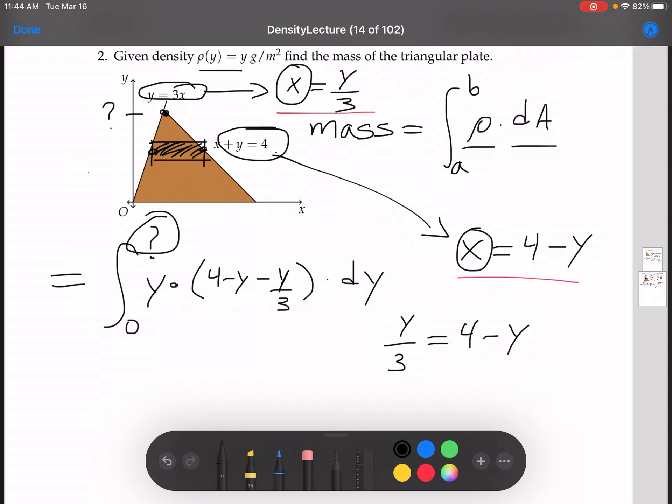Now solving for y. I'll multiply both sides by 3. That'll give me y equals 12 minus 3y. And then adding 3y to both sides, I'm going to get 4y equals 12 and y equals 3. So I see that where I have to stop is 3.